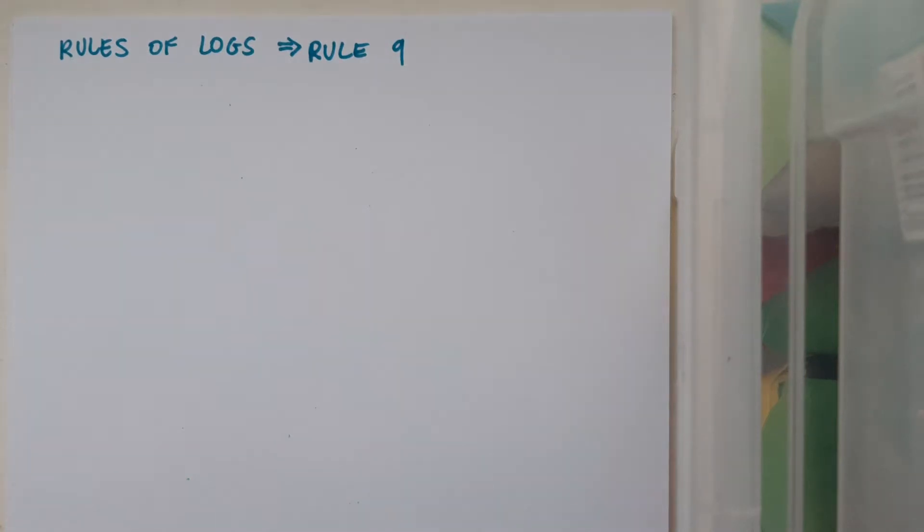This is a short video on the Rules of Logs Rule 9, which is the Change of Base Rule. And the rule as it appears in your log tables looks like this: log to the base b of x equals log to the base a of x over log to the base a of b.